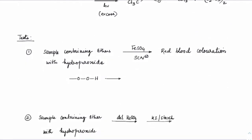Next, how do we identify whether there is any hydroperoxide present in ethers? The minute you have a hydroperoxide, it has a peroxy linkage which will act as a mild oxidizing agent. If we treat that with any Fe²⁺ salt, this Fe²⁺ will convert into Fe³⁺ in the presence of this peroxide. Then on reaction with thiocyanide, it would form a red blood color — Fe(SCN)₂ or Fe(SCN)₃ gives red coloration.